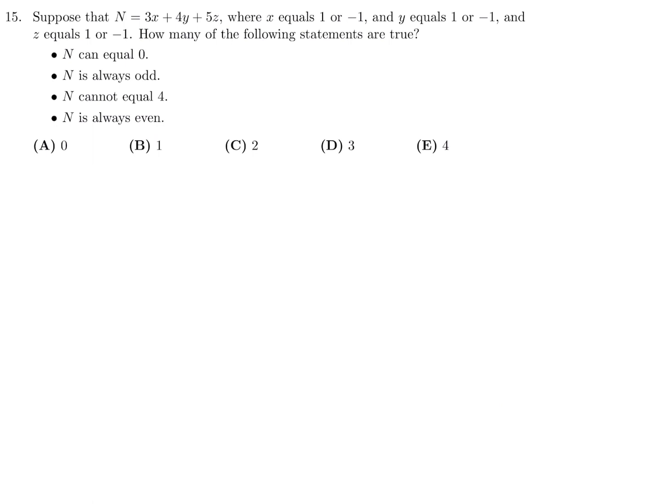Suppose that n, which is equal to 3x plus 4y plus 5z, where x is equal to 1 or negative 1, y is equal to 1 or negative 1, and z is equal to 1 or negative 1. How many of the following statements are true? n is equal to 3x plus 4y plus 5z. There's not that many choices here. I've got two choices for each. So 2 times 2 times 2, that's a total of 8 different possibilities. Since there's not that many, let's just do them all.